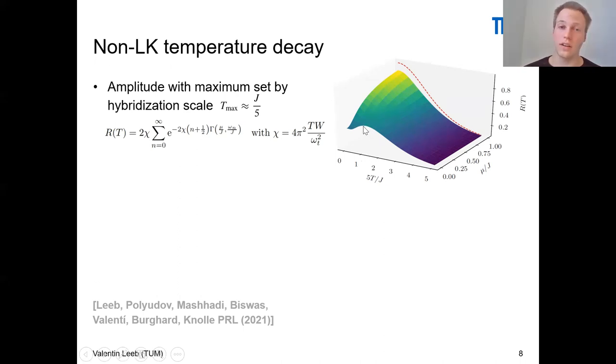If this deviation is small, we see that we recover a clear maximum at a value set by this hybridization scale J, and then the amplitude goes down again. This looks very similar to what people have observed experimentally and also what we have observed experimentally. As soon as we turn far enough away from this flat band, we recover the usual Lifshitz-Kosovich behavior again. The dashed line is just the usual Lifshitz-Kosovich curve, which decreases monotonically.